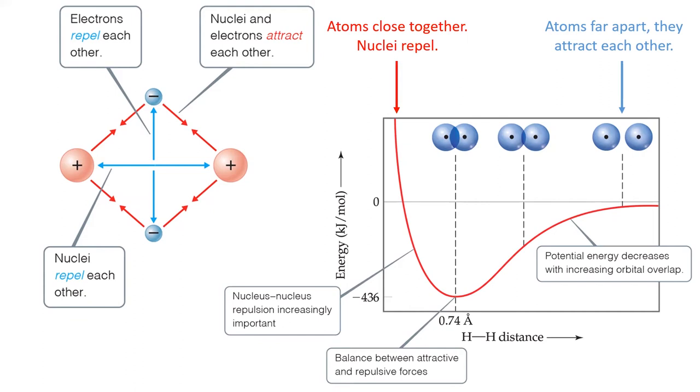But if the atoms get too close, their positively charged nuclei will repel each other. This can be seen in the graph by the very steep line on the far left. The point of the lowest energy is where the attractive forces and repulsive forces exactly cancel out. We call this the covalent bond length.